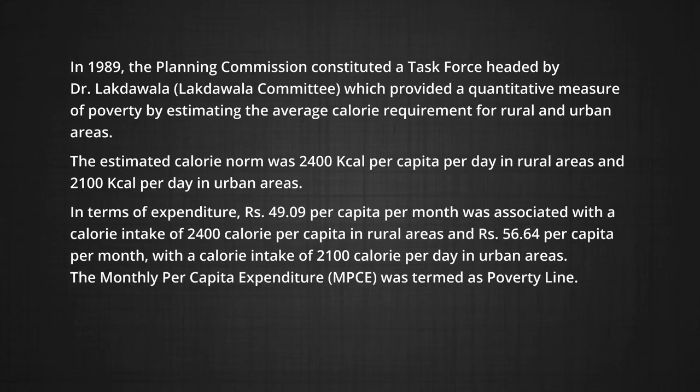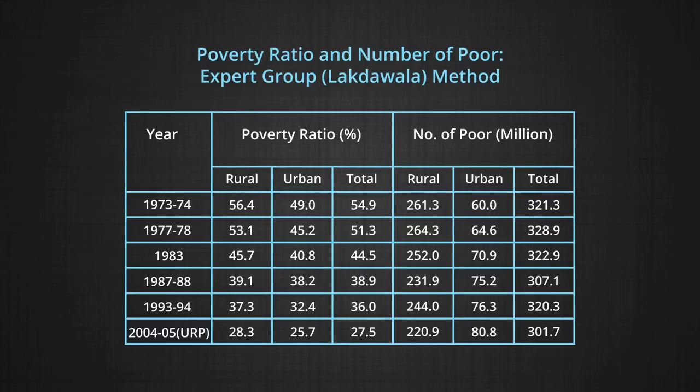The monthly per capita expenditure, popularly known as MPCE, was termed as the poverty line. Table 1 shows the poverty ratio in percentage and absolute number of poor people in both rural and urban areas, from the year 1973-74 to 2004-05. There has been a decline in both absolute number as well as percentage. It may be noted that URP, or Uniform Reference Recall Period consumption, collected consumer expenditure data for all items from a 30-day recall period.